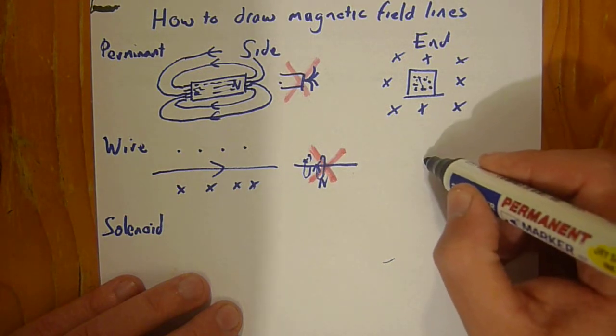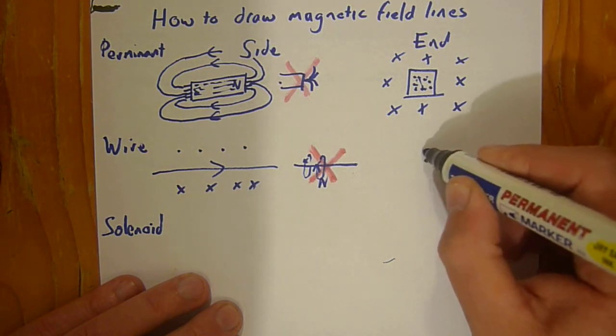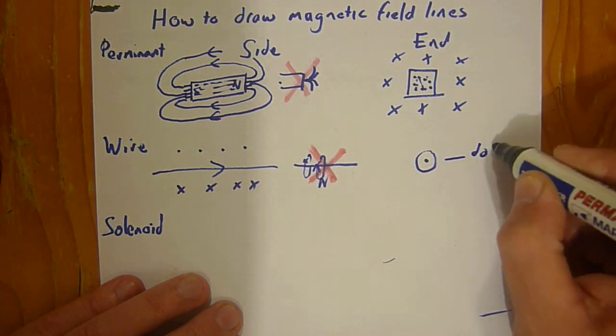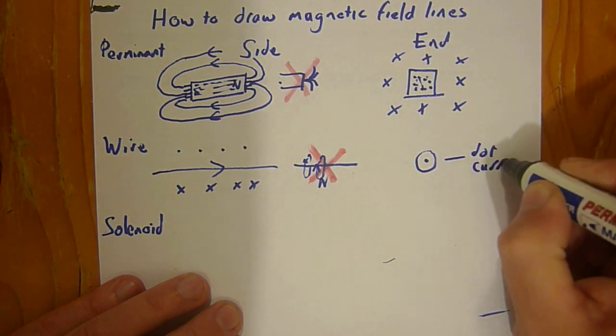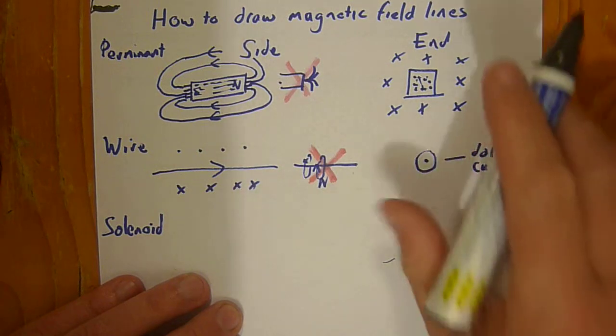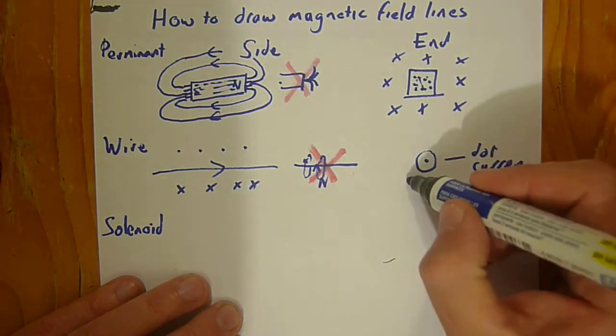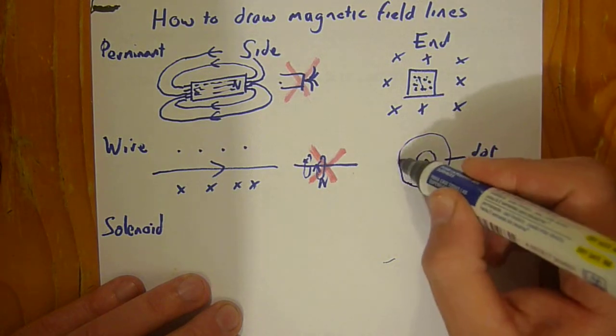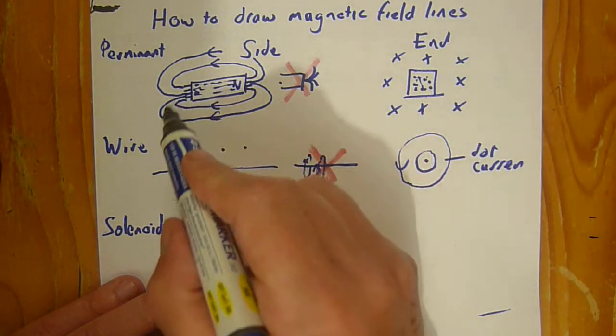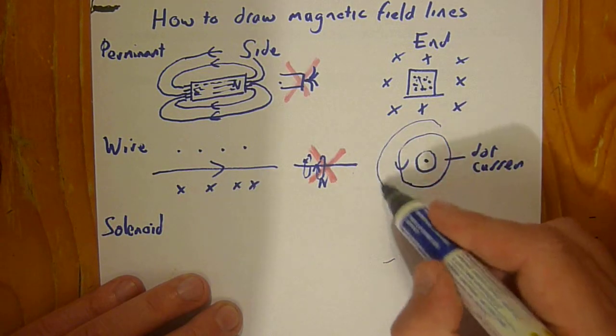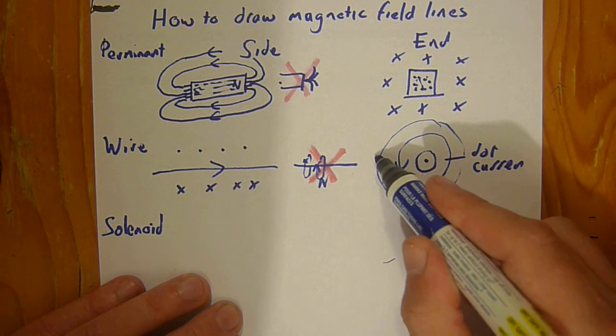The end view is that we have a wire with a dot in it showing current. If you do the right hand grip rule like this, the actual field lines go continuously around. Notice that all field lines never stop on a charge, they go forever. There's another field line going like this.